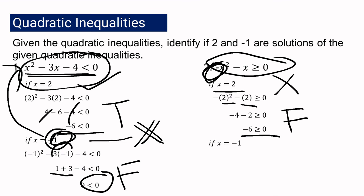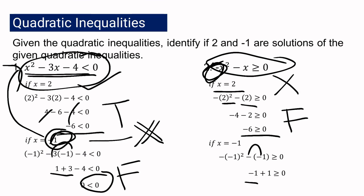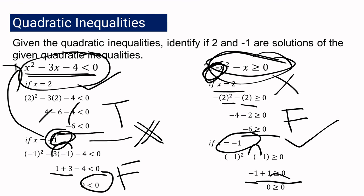Now let us check if negative 1 is a solution. Substituting negative 1: we have negative of negative 1 squared minus negative 1 is greater than or equal to 0. Simplifying: negative 1 plus 1, which gives 0 greater than or equal to 0. This is a true statement, because 0 is equal to 0. Therefore, negative 1 is a solution to this quadratic inequality.